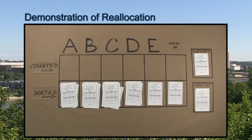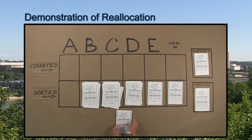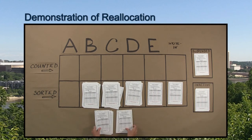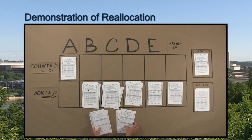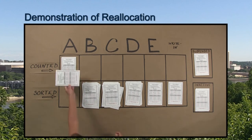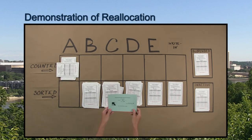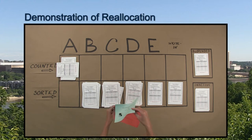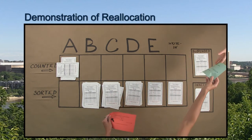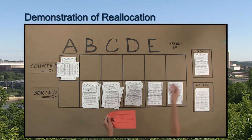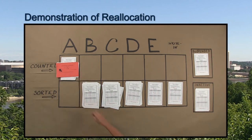Once all the ballots have been sorted into first-choice piles, each candidate pile is counted into groups of 25 and the total of first-choice votes is determined. After all ballots for a candidate have been counted, the vote totals are recorded onto summary statements. One statement is given to an election judge for recording and a copy is placed on top of the ballot pile.